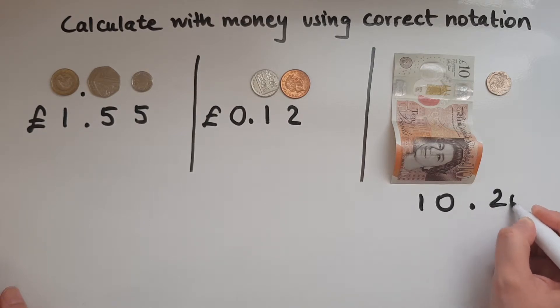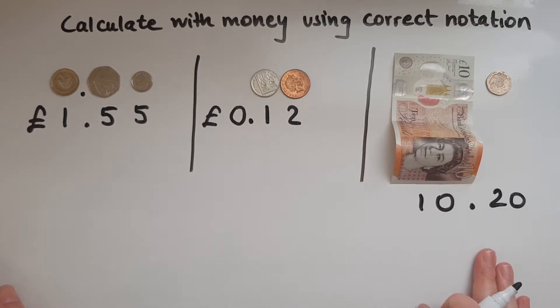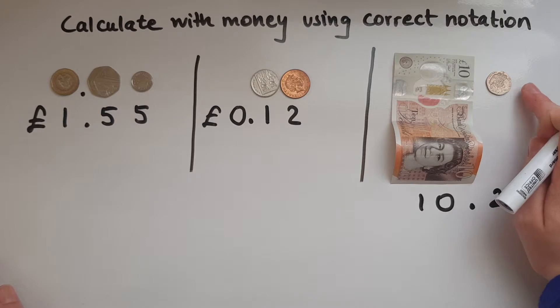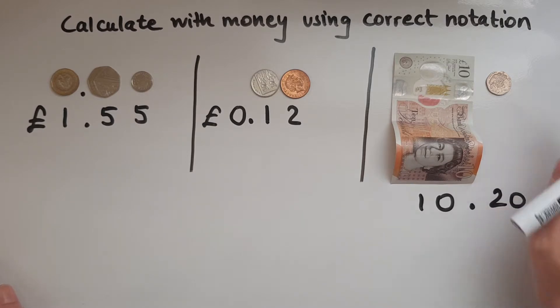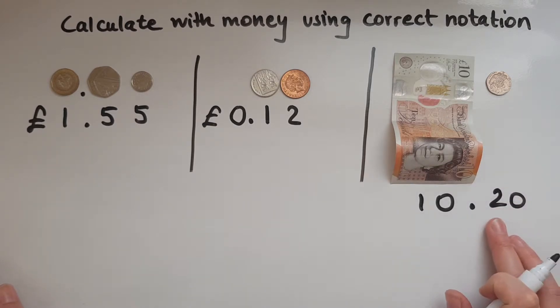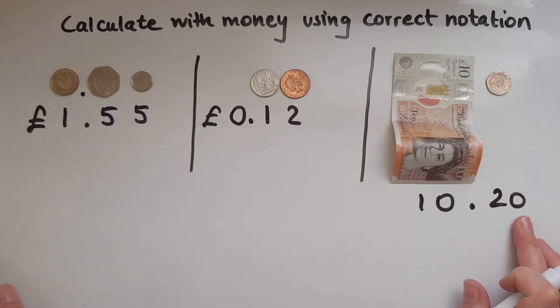And what I have here is 10 pounds and 20 pence. I haven't got any pennies, so it's going to be 10 pounds and 20 pence — written as 10.20.